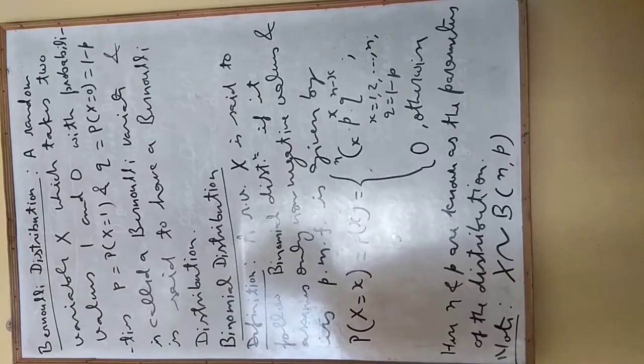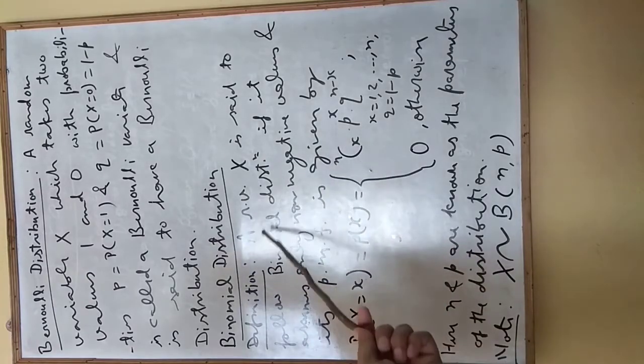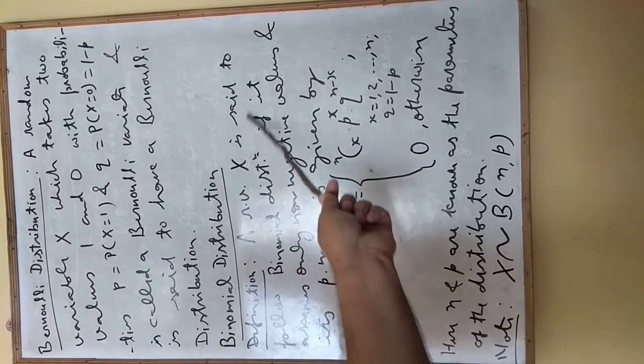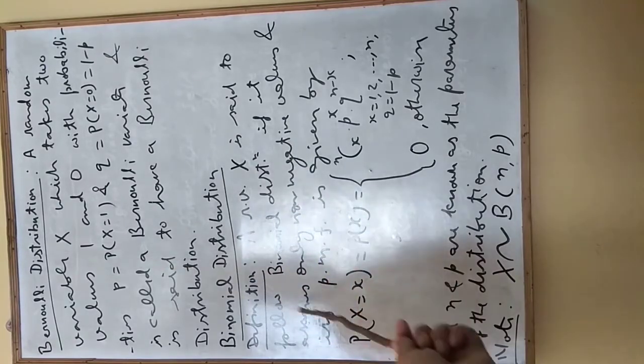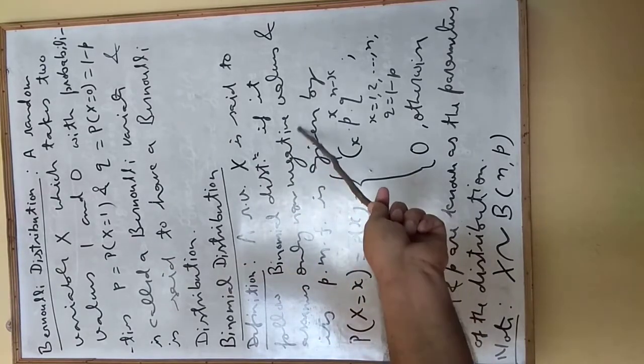Now for binomial distribution, first the definition, then we will derive this. A random variable X is said to follow binomial distribution if it assumes only non-negative values.